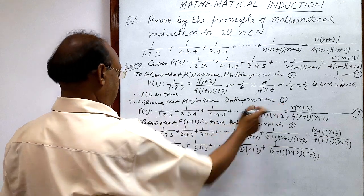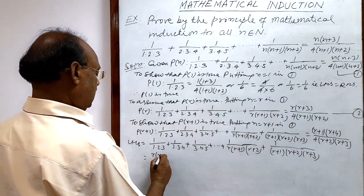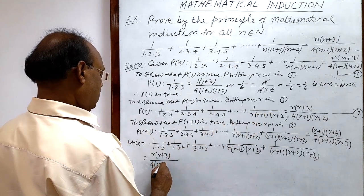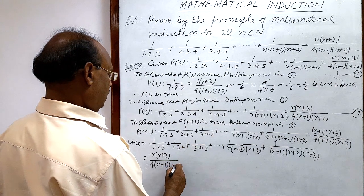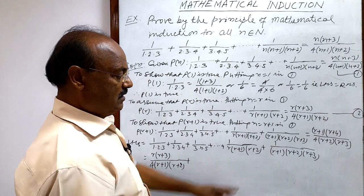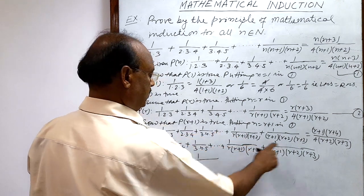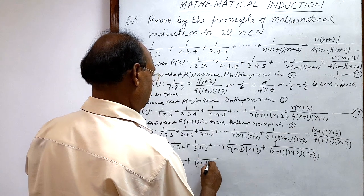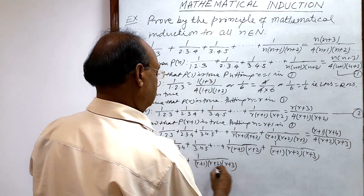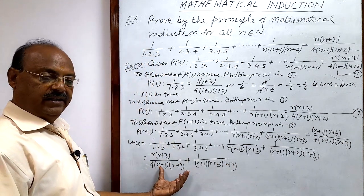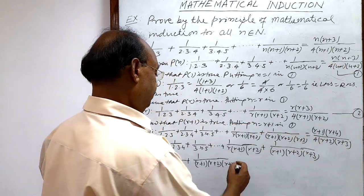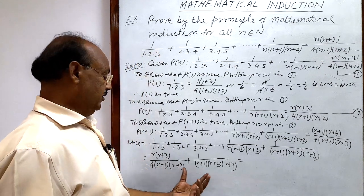We replace the sum up to r terms using relation number 2, giving r(r+3) / [4·(r+1)·(r+2)] + 1/((r+1)·(r+2)·(r+3)). Now we take the LCM of the denominators to simplify.